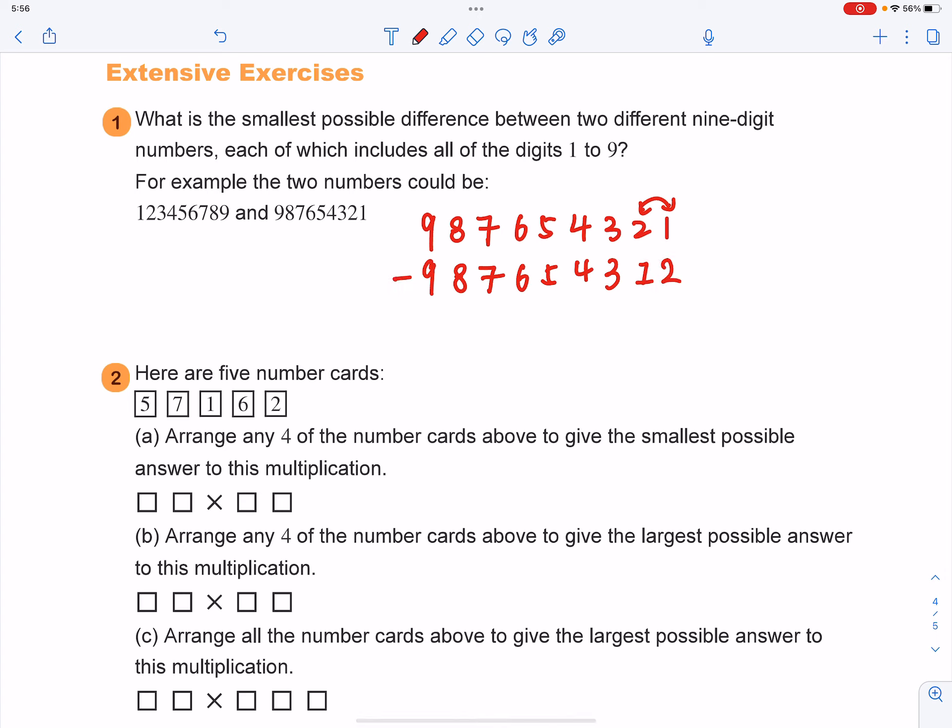And then you do the subtraction of these two numbers, you get an answer which is 9. So the smallest possible difference will be 9 to this question.